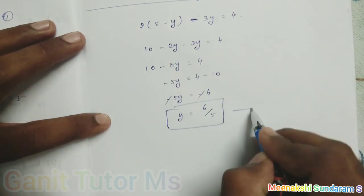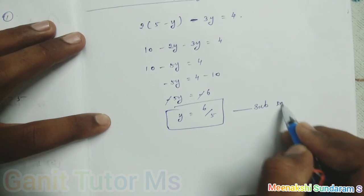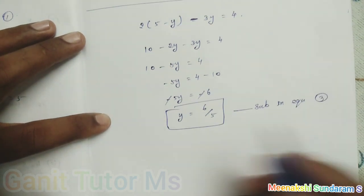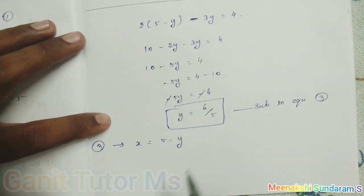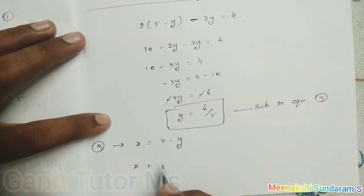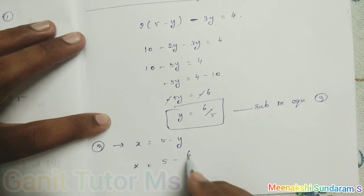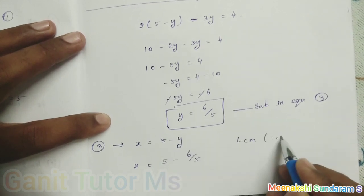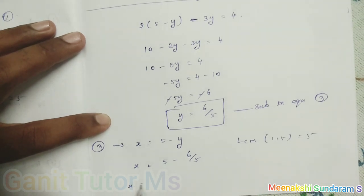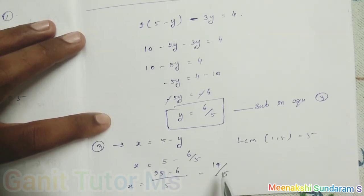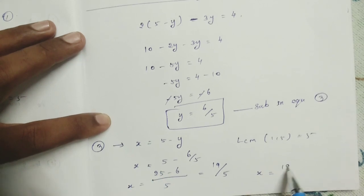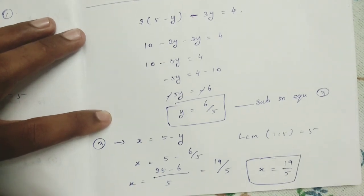So minus 5y equals 4 minus 10, which equals minus 6. The minus signs cancel, giving y equals 6 by 5. Now we substitute this y value into equation 3: x equals 5 minus 6 by 5. Taking LCM of 1 and 5, which is 5: x equals 25 minus 6 over 5, which is 19 by 5. Now we have found the x value, that is 19 by 5.